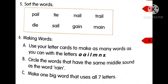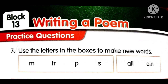Now move to page number 86: use the letters in the boxes to make new words. For example, if M, M, T, R, P, and S are in the first box, and A-I-L and A-I-N are in the second box, you can combine them: take M from the first box and A, I, L from the second box to make 'mail'; take M, A, I, N to make 'main.' In the same way, try to make more and more words.